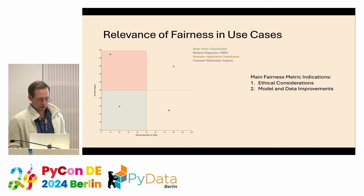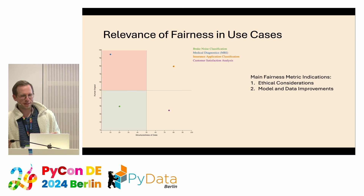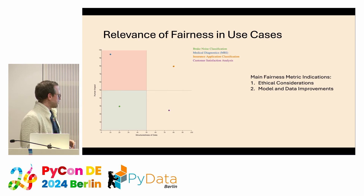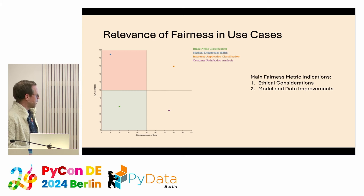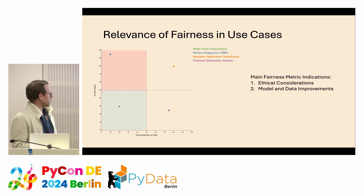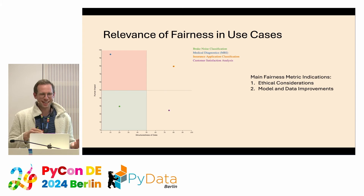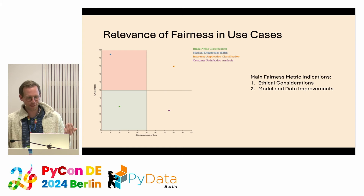Before a practical example, you may ask yourself: is this relevant for my use case if I have only indirect human impact? My answer is yes. You have use cases with unstructured data along a human impact axis — from high impact like medical diagnostics with MRI data, to lower direct impact like judging vehicle comfort by classifying brake noise in vehicles, which is a typical use case I deal with.